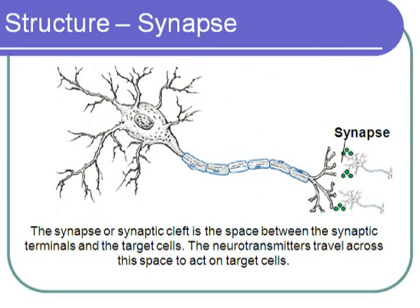The synapse, or synaptic cleft, is the space between the synaptic terminals and the target cells. The neurotransmitters, after being released by the synaptic terminals, must travel across this synaptic space in order to act on target cells.